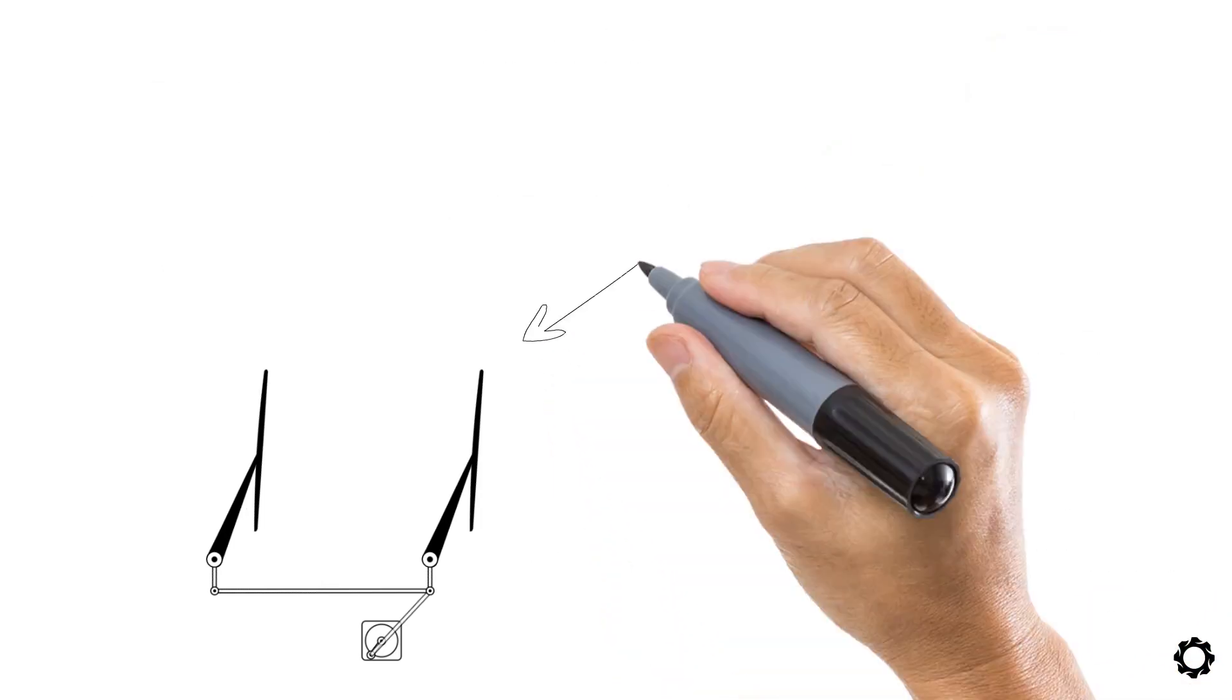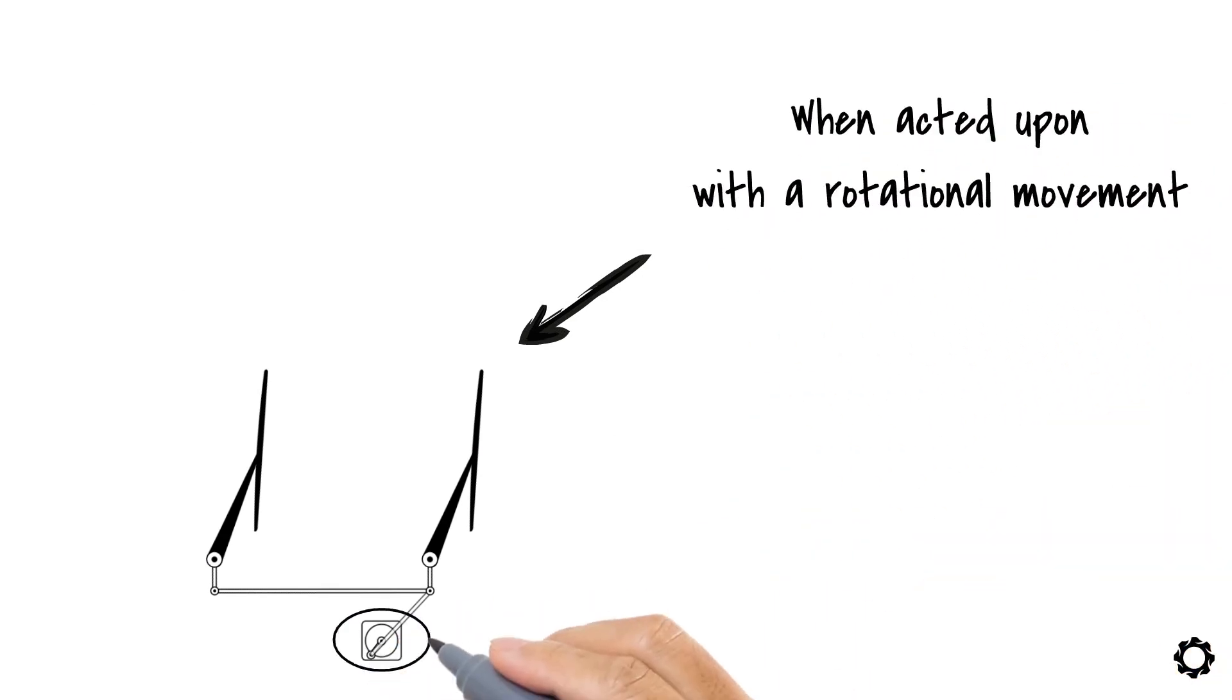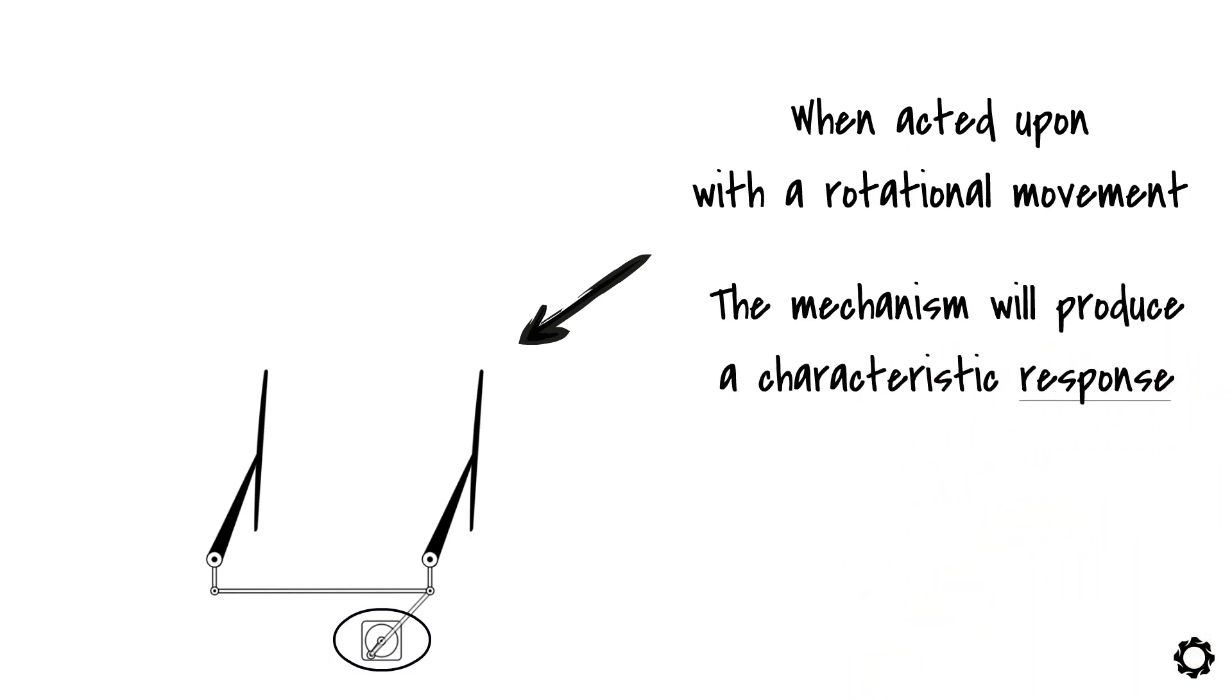In fact, depending on the lengths of the members of the 4-bar mechanism when acted upon with a rotational movement in its input element, the mechanism will produce a characteristic response. One of these responses is the one that the windshield wiper does.